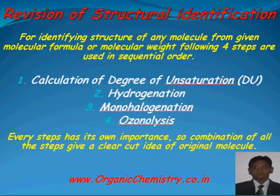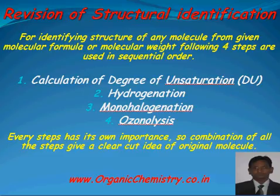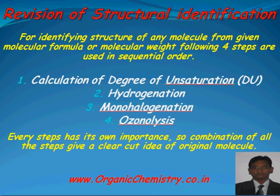Revision of Structural Identification. For identifying the structure of any molecule from a given molecular formula or molecular weight, the following steps are used in sequential order: first, calculation of degree of unsaturation (DU); second, hydrogenation; third, monohalogenation; and last, ozonolysis. Each step has its own importance, so the combination of all steps gives a clear-cut idea of the original molecule.